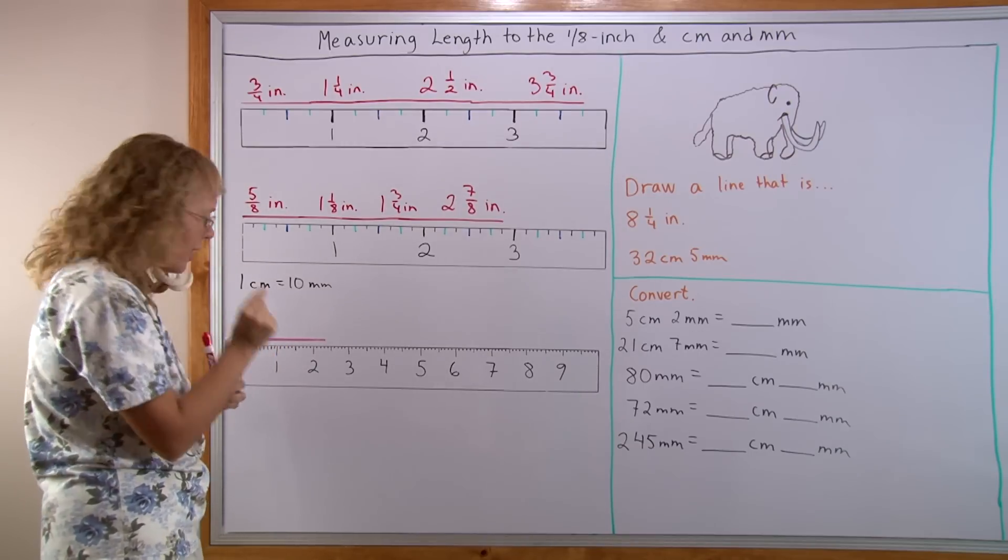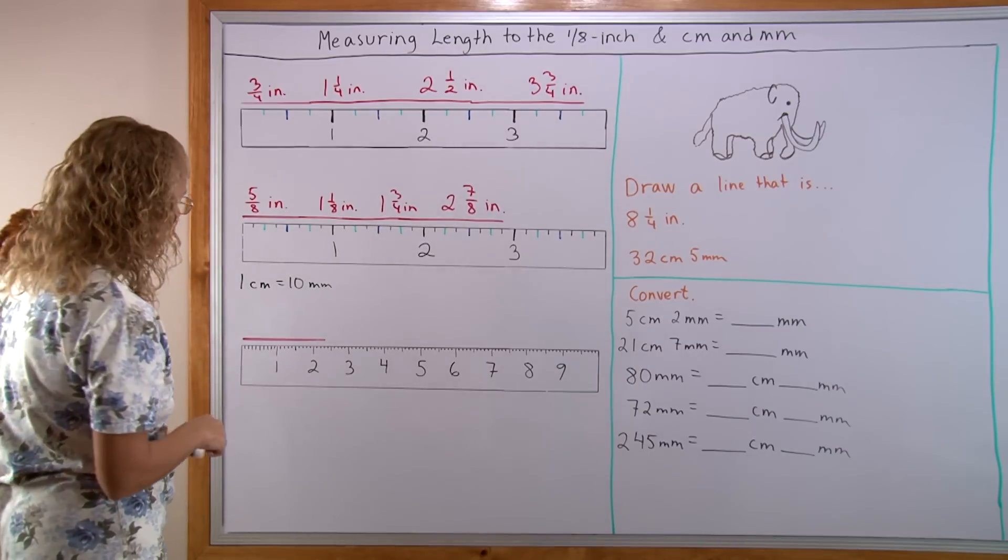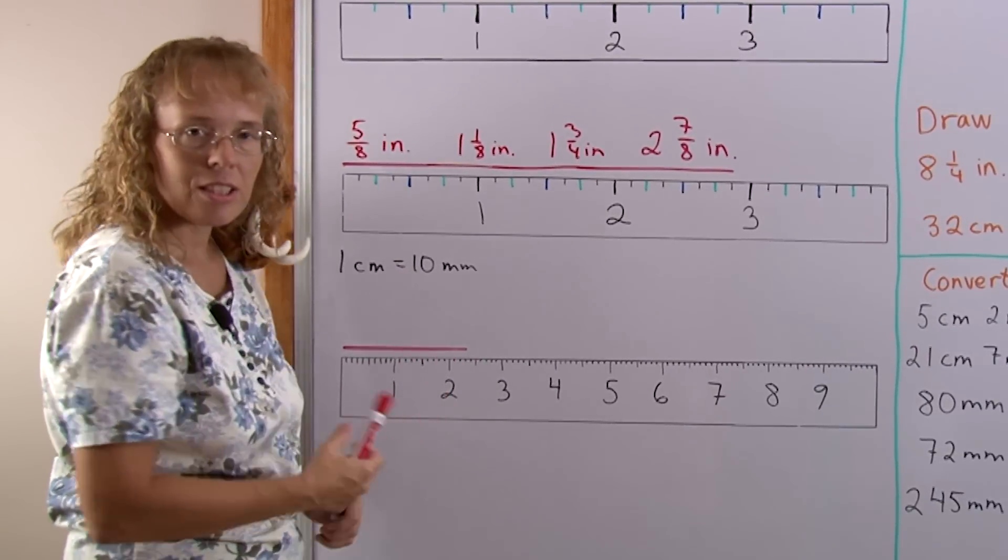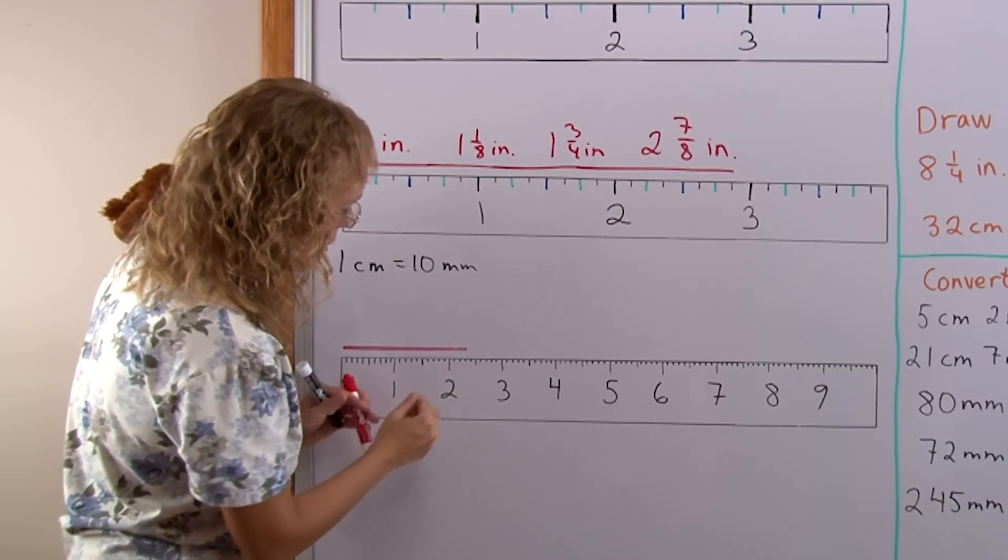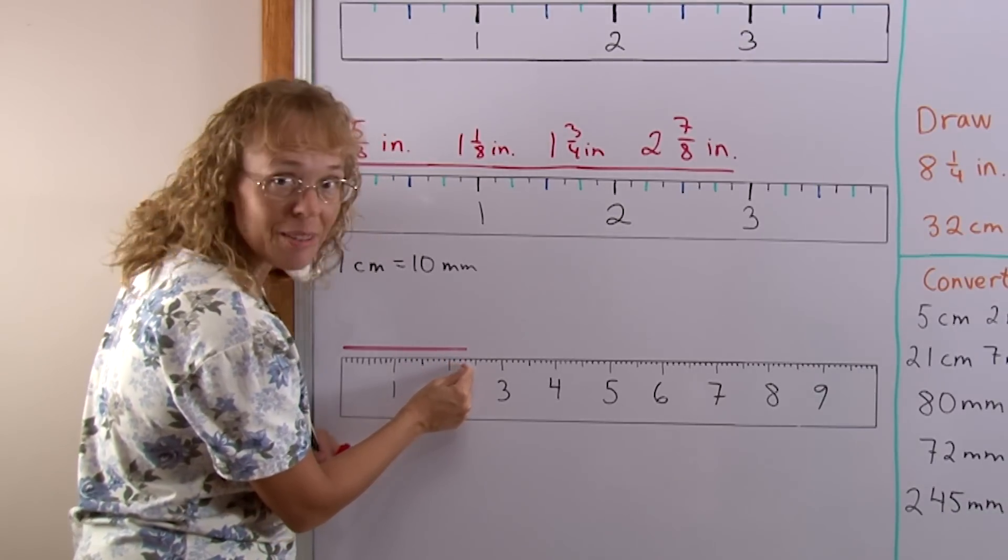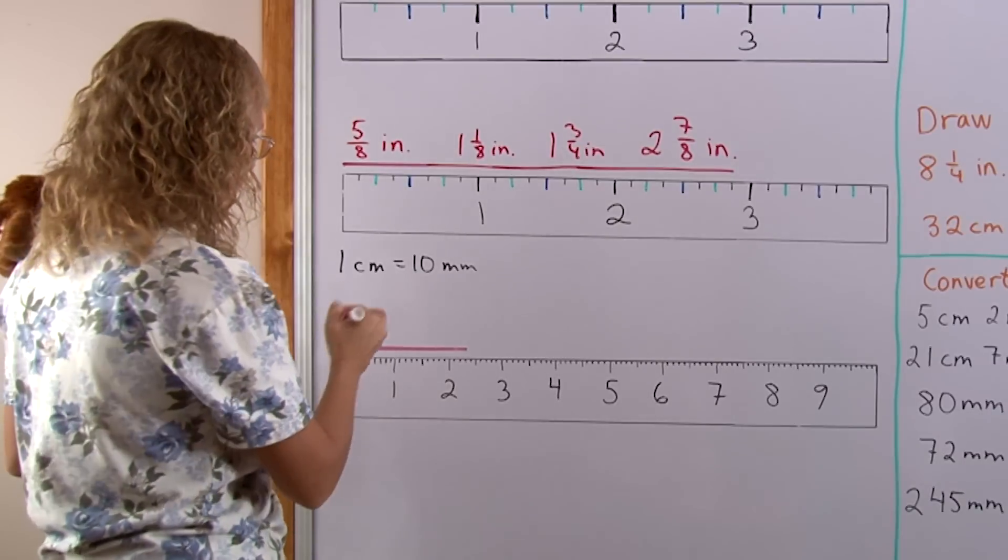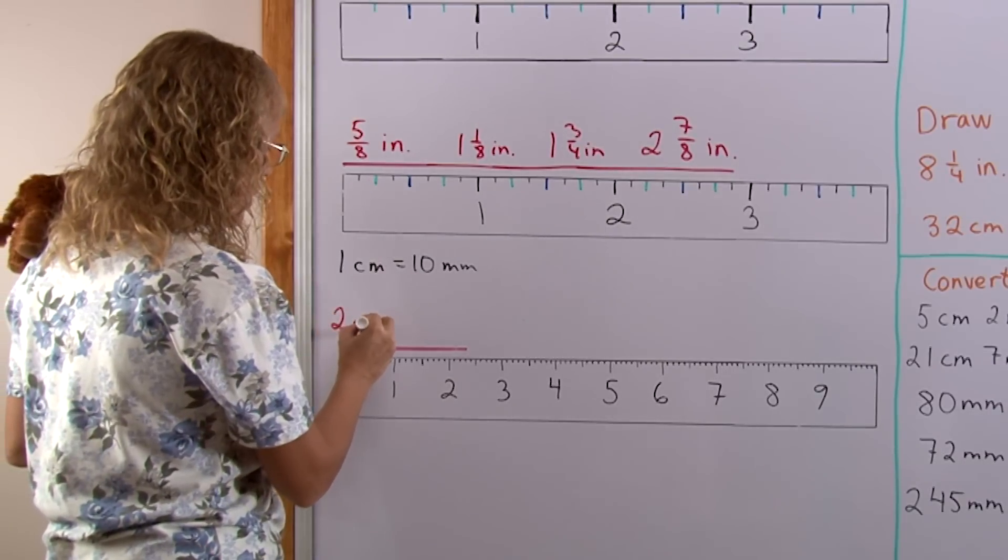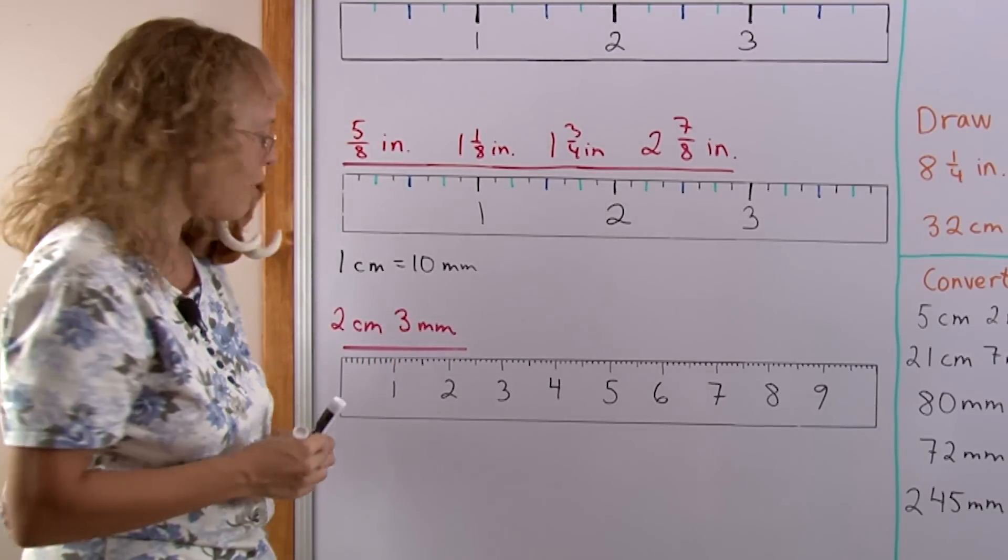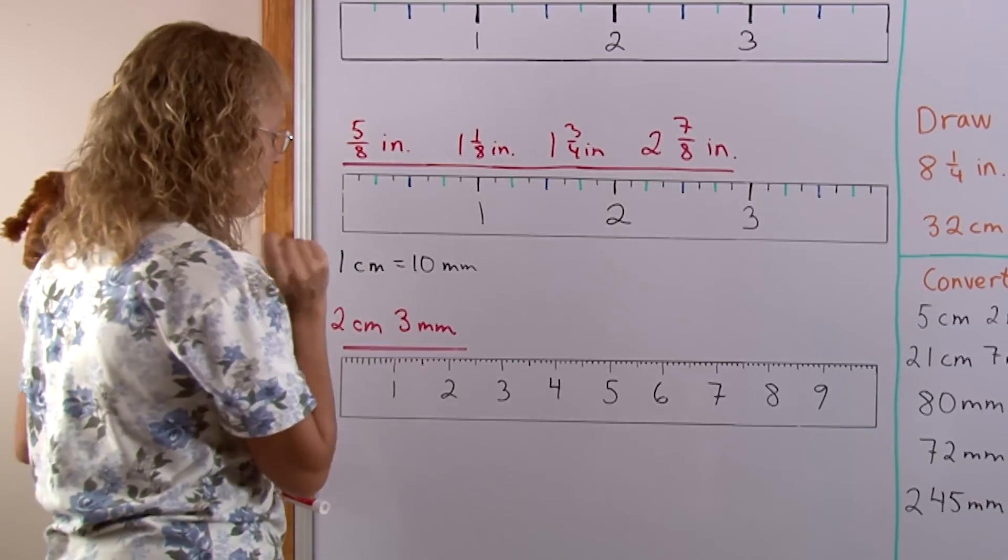The millimeters are the tiny things here. Let's see my line here. How long is it? It has 2 whole centimeters. It goes past the 2 centimeter mark and then a little bit further. How many little tick marks? 1, 2 and 3. So this line is 2 centimeters, 3 millimeters long. You have to write it like that. 2 centimeters, 3 millimeters.